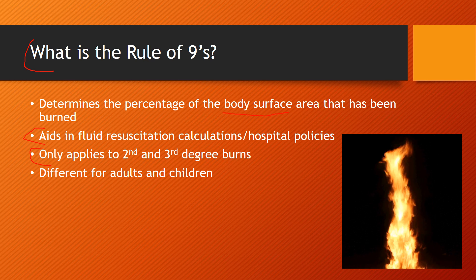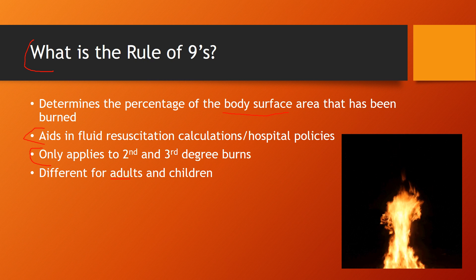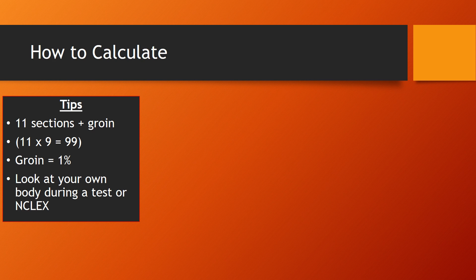The way of calculating it is different for adults and for children. In this video we'll only be discussing adults. So how do you calculate or basically how do you use the rule of nines? The most important thing you can remember is that there are 11 sections plus the groin. 11 of those sections are worth 9%, 11 times 9 is 99 plus the 1%, that's 100%.